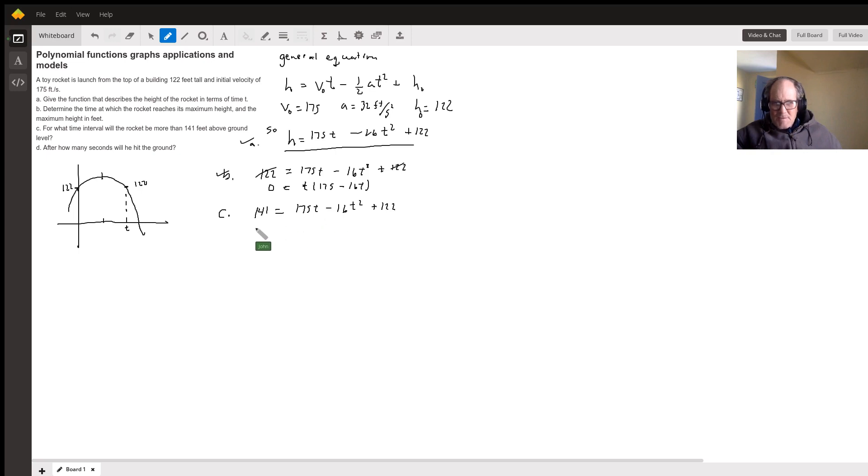Now, put this all in order, 16T squared. I'll move everything over to this side. 175T, move that 122 over, and I get plus 19.